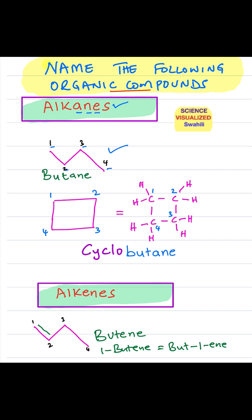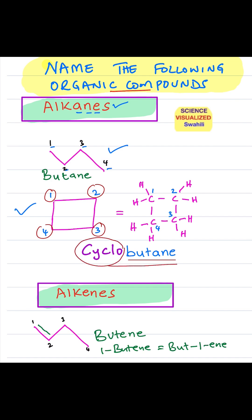Next, we look at this cyclic alkane, and that cyclic alkane has 1, 2, 3, and 4 carbons. So each corner is a carbon, and because it has 4 carbons, the parent name is going to be butane. But because it's cyclic, you add the word cyclo, so the name becomes cyclobutane.